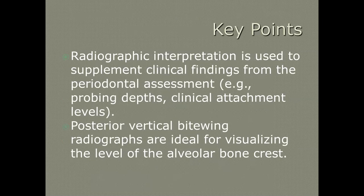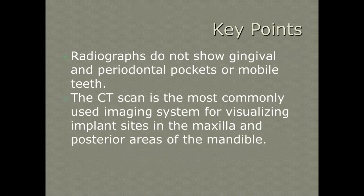Key points: radiographic interpretation is used to supplement clinical findings. We like to use vertical bite wings for the posterior — you can take anterior vertical bite wings as well because they give a clear indication of what that bony crest is like. What radiographs don't show us is gingival and periodontal pockets. CT scans are being used now for visualizing implant sites. That is it for radiographic interpretation.